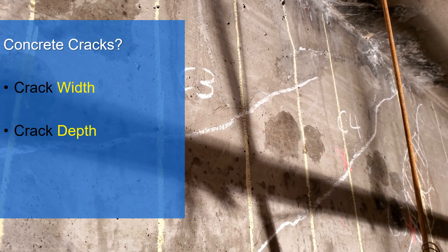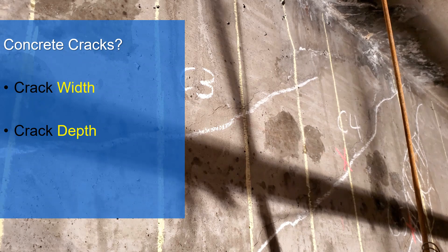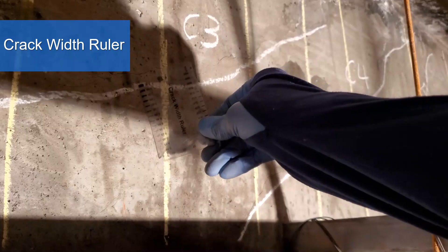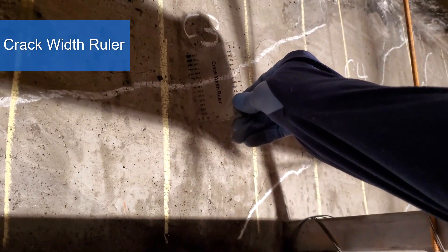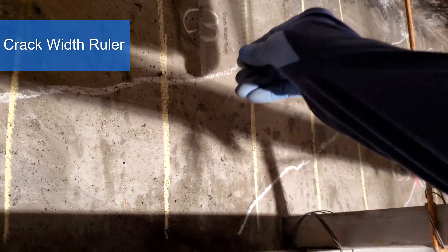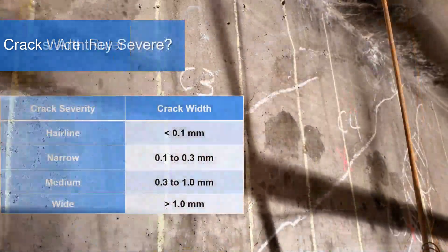Crack depths can provide an indication of the severity of the cracks. Crack widths can easily be measured using a simple crack ruler. Modern applications using image processing techniques or laser scans can also be used to study the distribution and width of the cracks.